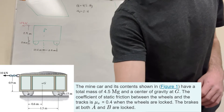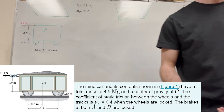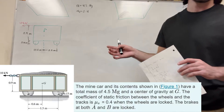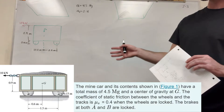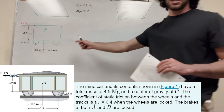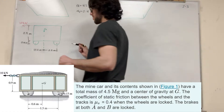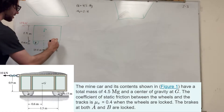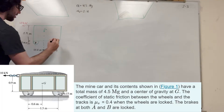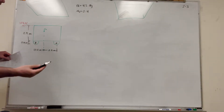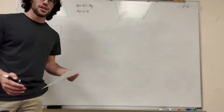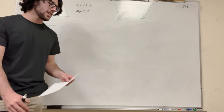So we have this minecart. It weighs 4.5 megagrams, it has a center of gravity at G, and a coefficient of friction of 0.4, and it has wheels A and B — let me label these before I forget. So this is B, and this is A. It wants us to find the normal forces at B and at A, and then ask: does the cart move?